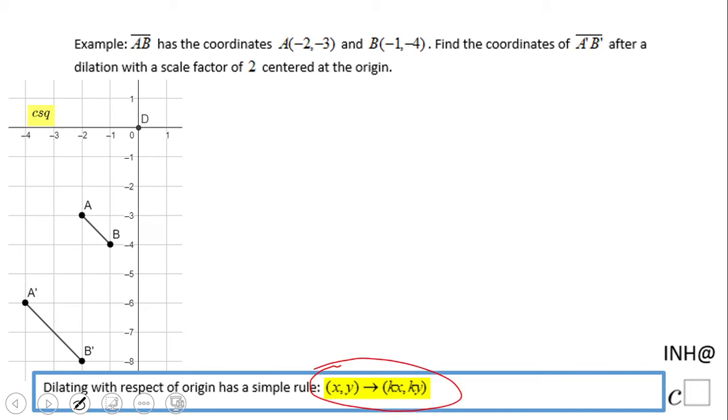For example, A which is (-2, -3) becomes A' which is going to be -2 times 2 equals -4, and -3 times 2 equals -6. So A' is (-4, -6).